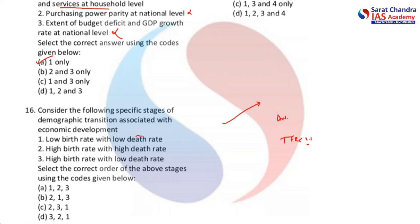When there is high economic development, take the case of Japan — there is a very high aging population, meaning a very low death rate. Also, because the TFR is far less than 2.1 in these economies, the birth rate is also very low. This scenario of low death rate and low birth rate is something pertaining to a highly developed economy.